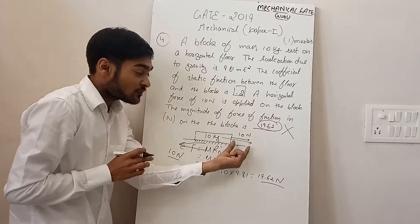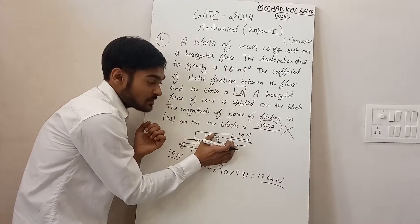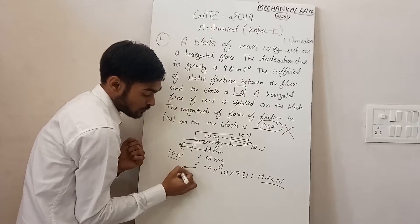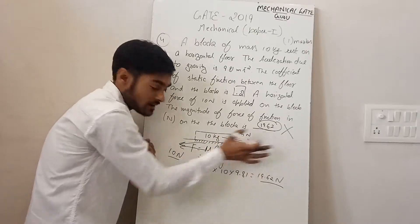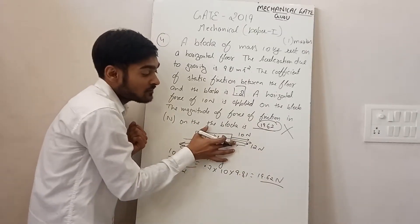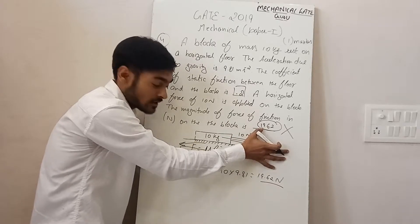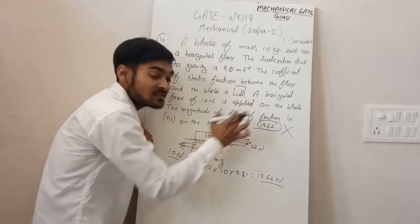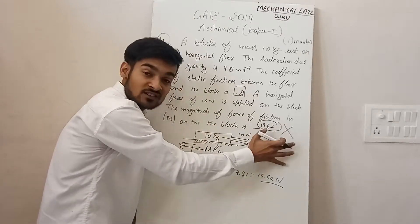If you have 12 N, then friction force will be 12 N. If you have 15 N, then friction force will be 15 N, then 19 N. Friction force will be 19 N. But if you have 19.62, friction force will be limited.